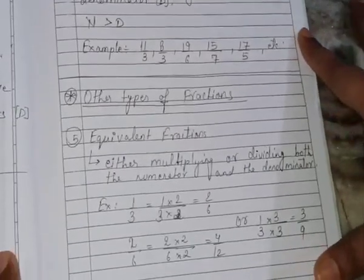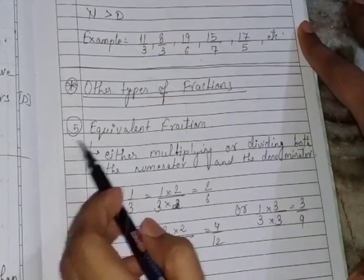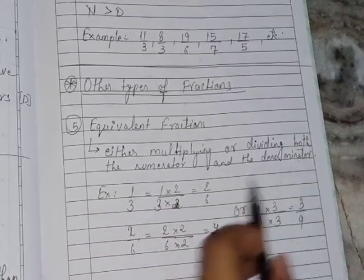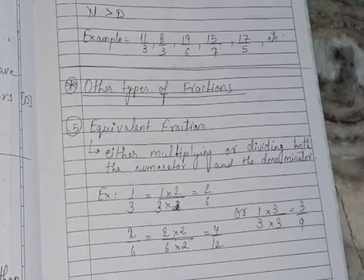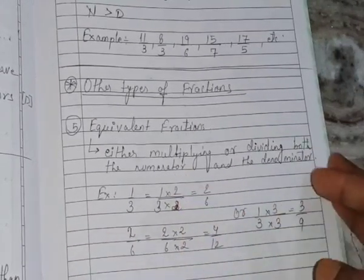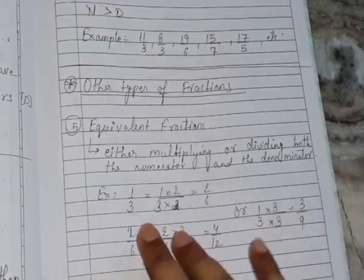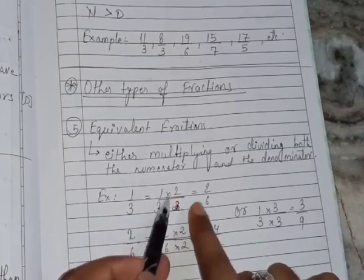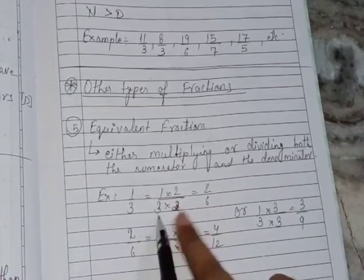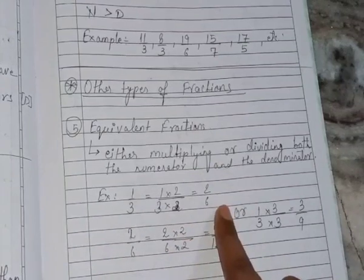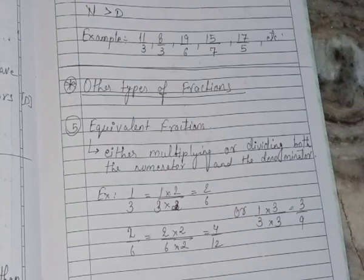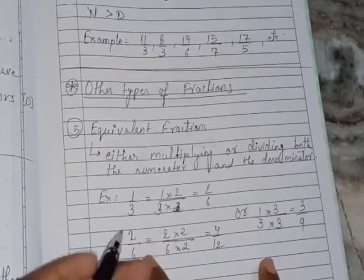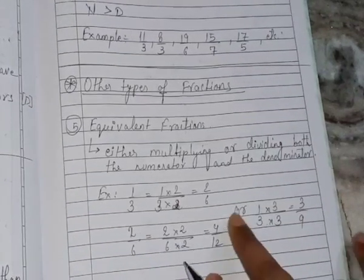The next type is equivalent fractions. We get equivalent fractions by either multiplying or dividing both the numerator and the denominator by the same number. For example, take 1 by 3. If we multiply both numerator and denominator by 2, we get 2 by 6. So, 2 by 6 is an equivalent fraction of 1 by 3. Similarly, we can multiply by 2 to get 4 by 12.